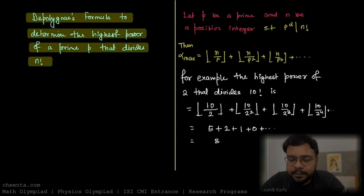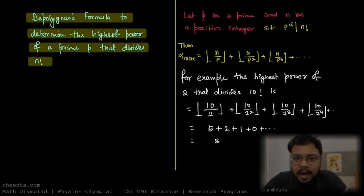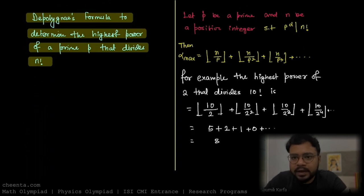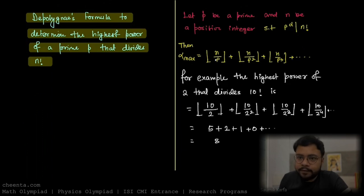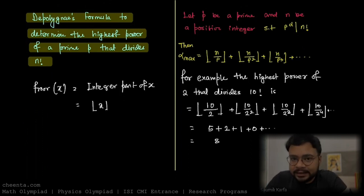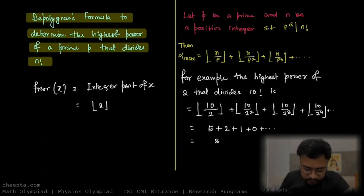For example, let P be a prime and N be any natural number. If P to the power alpha divides N factorial, we can find the maximum value of alpha using De Polignac's formula. Alpha max equals the sum of floor of N over P, floor of N over P squared, and so on. The floor of X, where X is a real number, is just the integer part of X, denoted by box notation or floor of X.